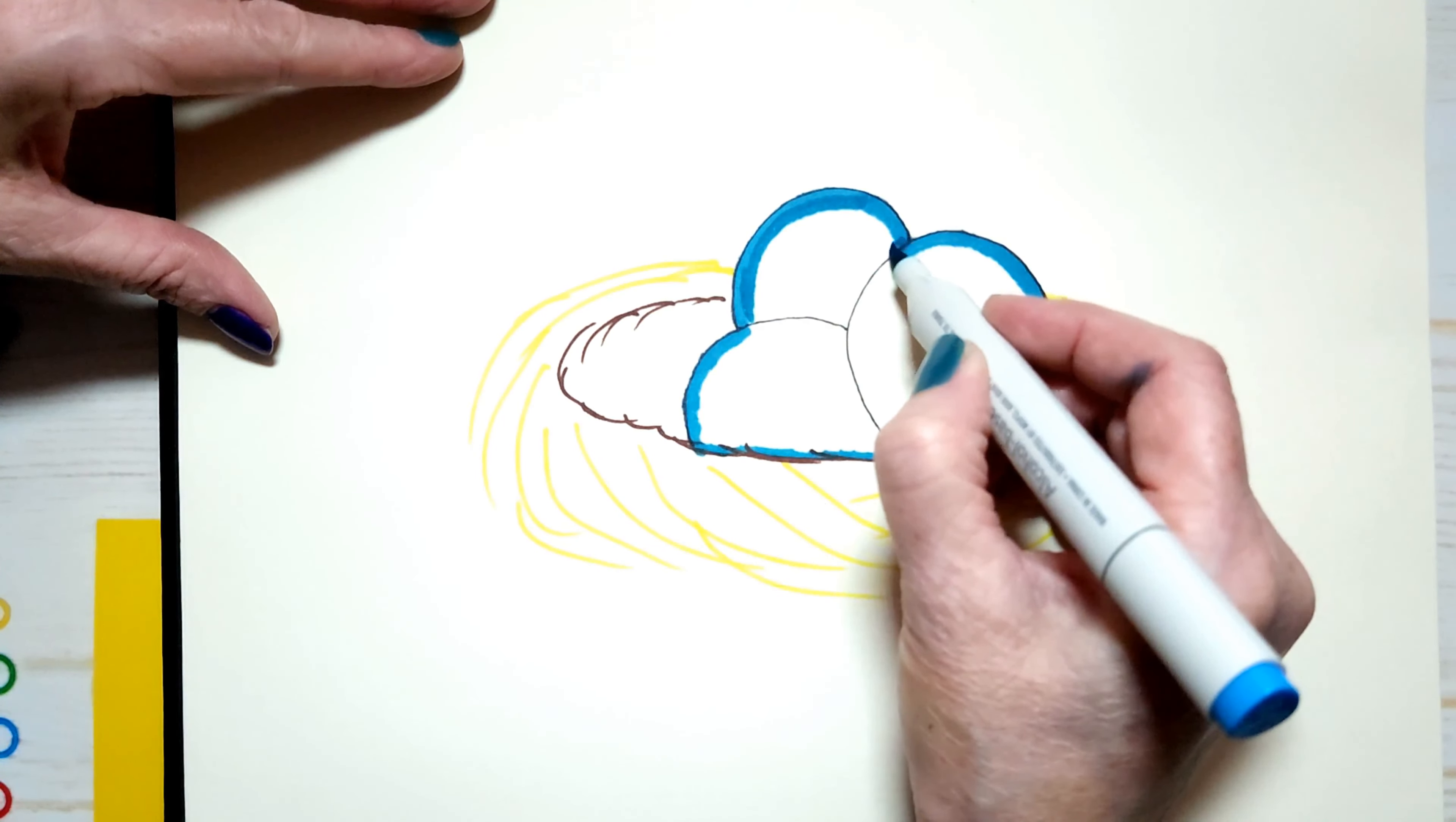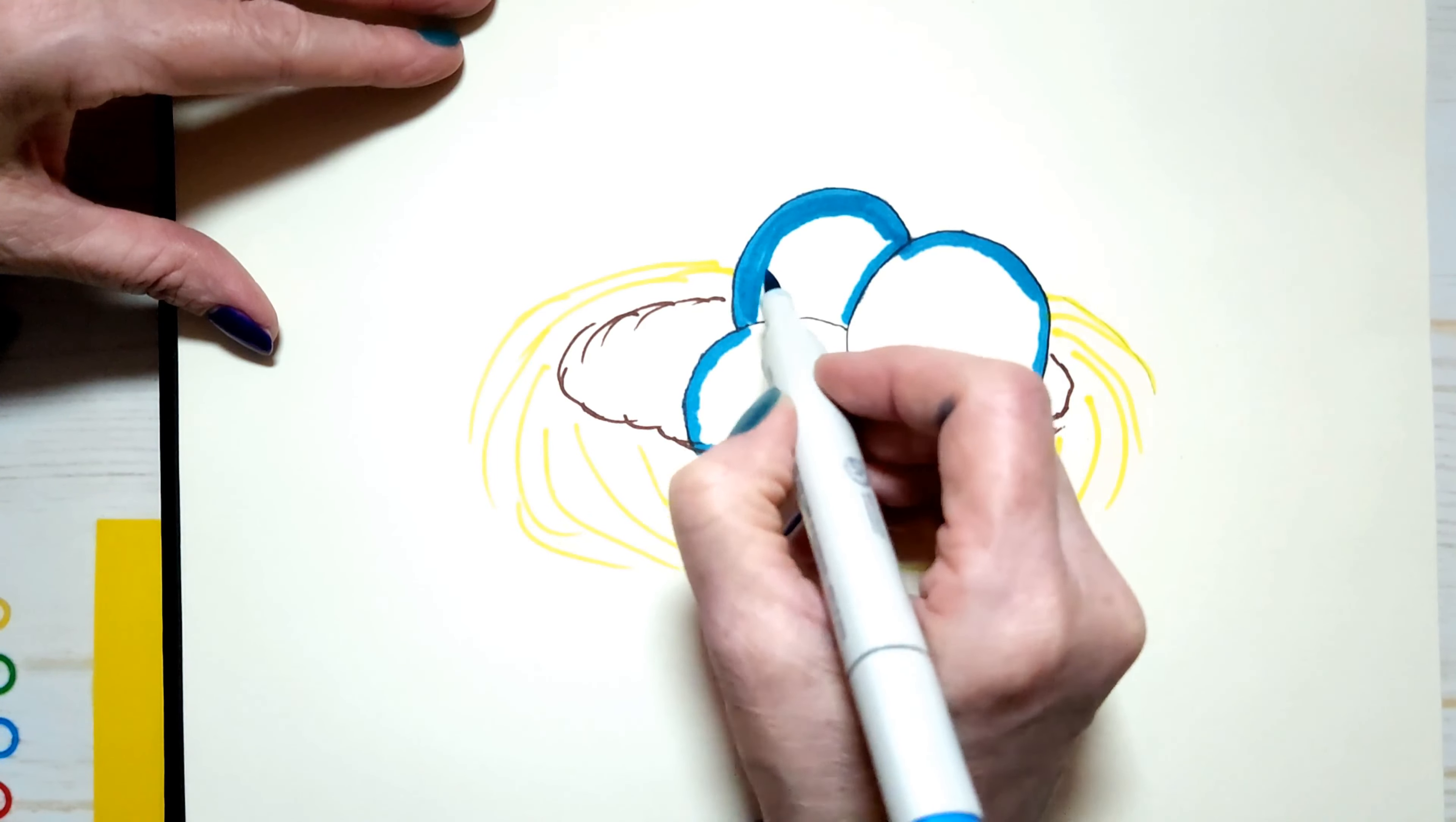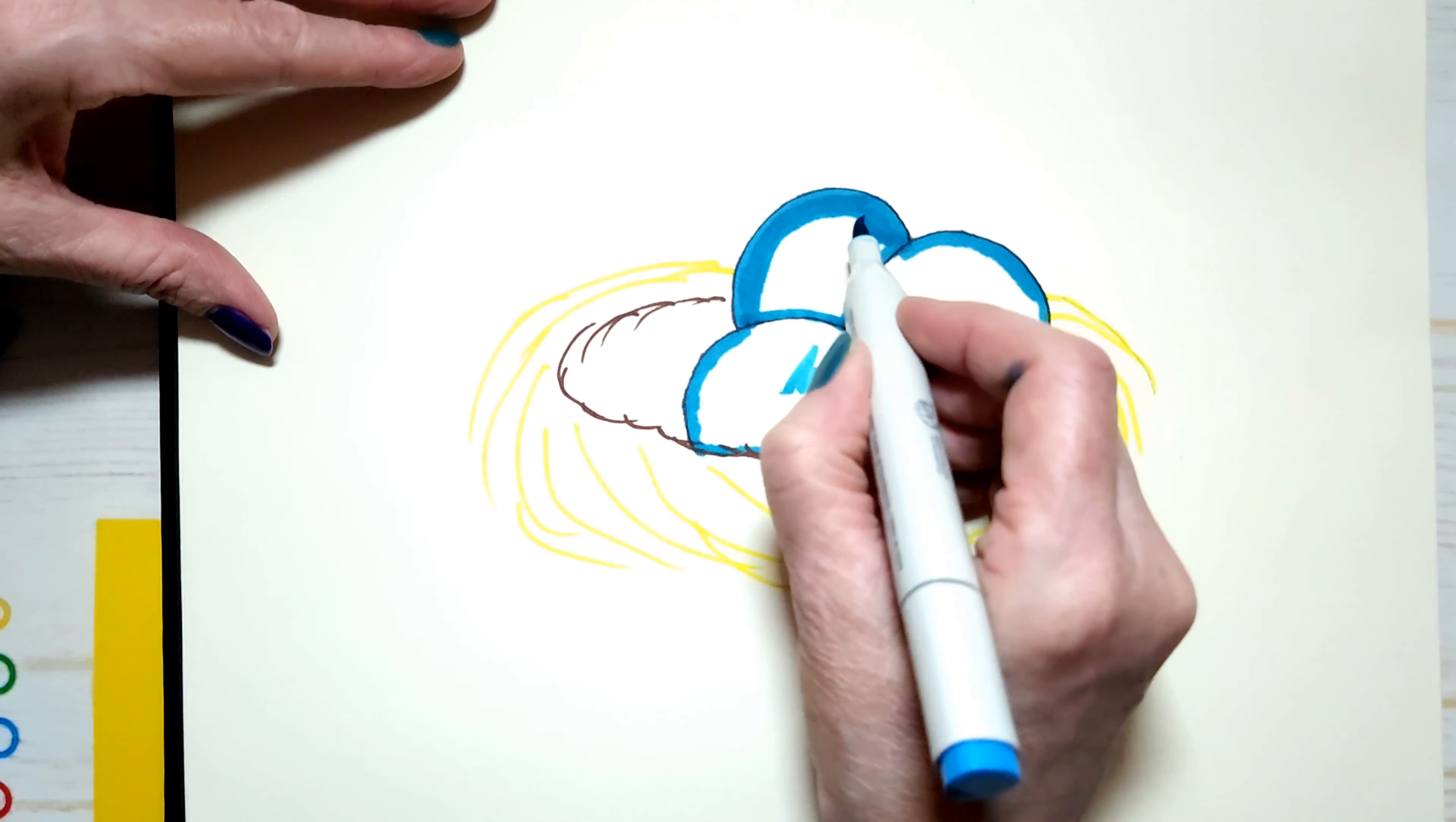With these markers that have the paintbrush tip, you can't go fast because it doesn't give you the same color. It gets too light. So I go slowly.